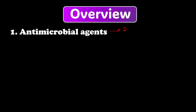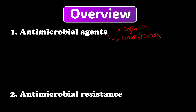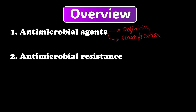Under antimicrobial agents we're going to cover two things: first the definition, and then the classification — there are various ways to classify antimicrobial agents. The second topic is antimicrobial resistance, which is very important. We'll cover the definition, then acquired resistance versus intrinsic resistance.